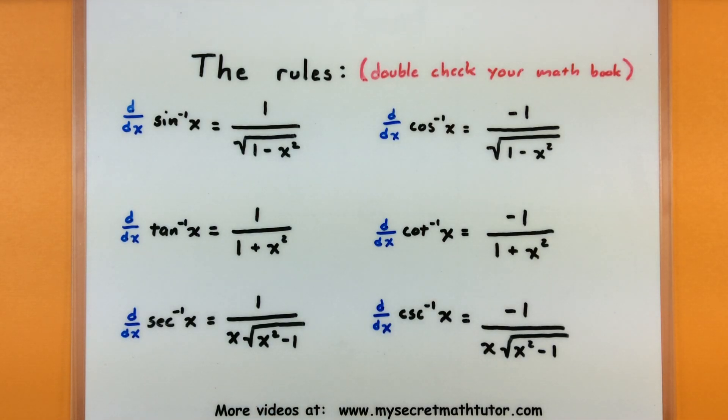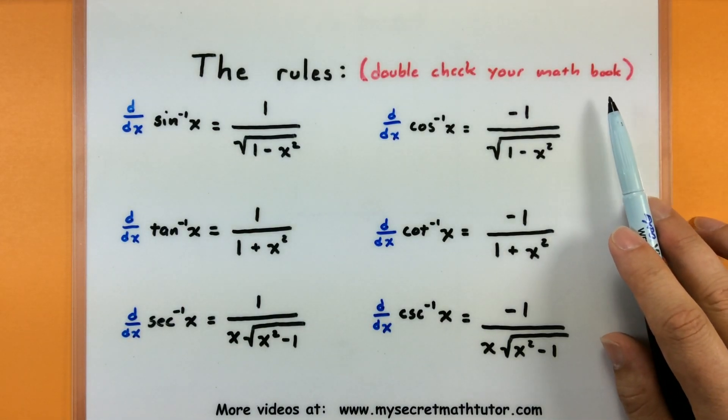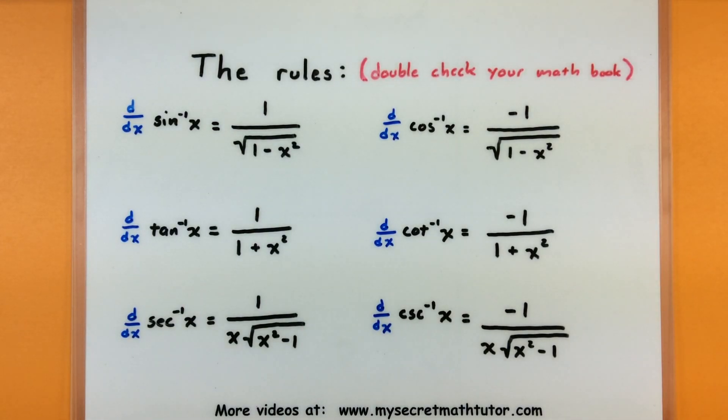Now before we jump into two examples, I want to really make a note that these definitions actually may be different than your particular math book. It all depends on how the math book has set these functions up, how they've defined them. And you may end up with something slightly different. So yours may end up with some restrictions in there, maybe it has some absolute values. Double check your math book before you start on your homework and you start using these particular rules. Alright, let's go ahead and give these guys a try.